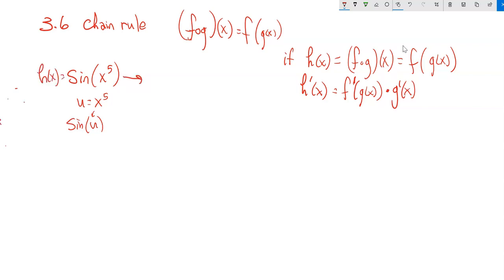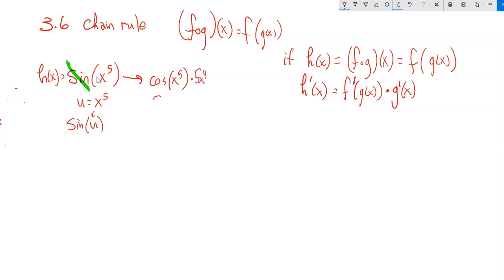If I'm going to take the derivative of sine of x to the fifth, the derivative of sine — that's the most outside function — is cosine. So it would be cosine of whatever is in there, times the derivative of x to the fifth. The derivative of x to the fifth is 5x to the fourth. So this would be 5x to the fourth times cosine of x to the fifth.